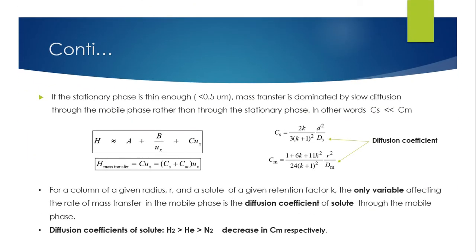If the stationary phase is thin enough — 0.5 µm — mass transfer is dominated by slow diffusion through the mobile phase rather than through the stationary phase, in other words, Cm dominates Cs. For a column of a given radius R, and a solute of a given retention factor K, the only variable affecting the rate of mass transfer in the mobile phase is the diffusion coefficient of the solute through the mobile phase.